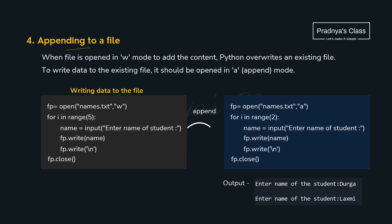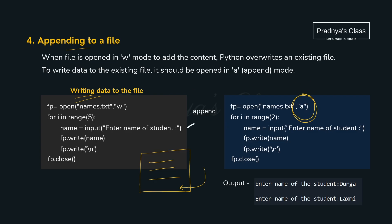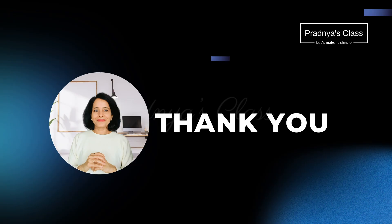There is one more operation — appending data to the file. If the file is already created with some data and you want to add more data, you will be appending. For that, the process is the same as writing, but with one change: the mode will be A, not W. If you open the same file in W mode, the data will get erased. That's why we don't open an already existing file in W mode. We should open it in A mode to append data to the existing file.